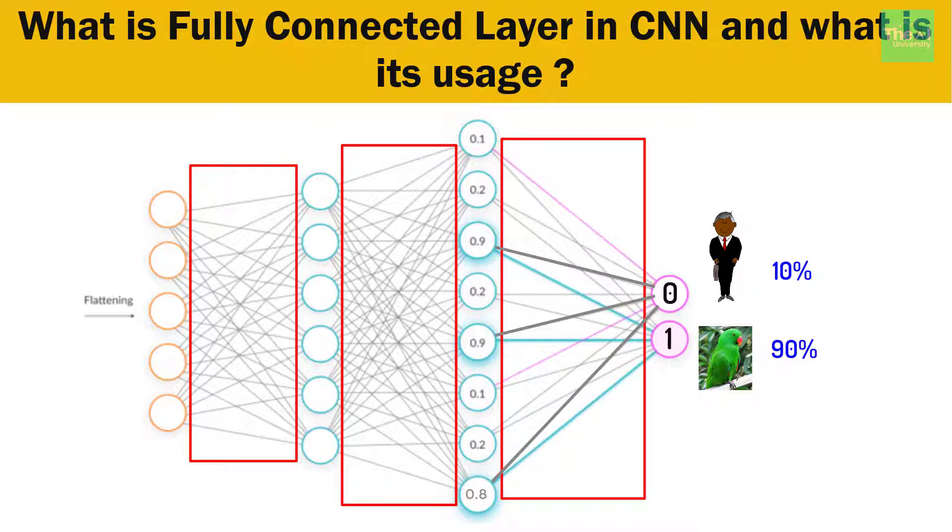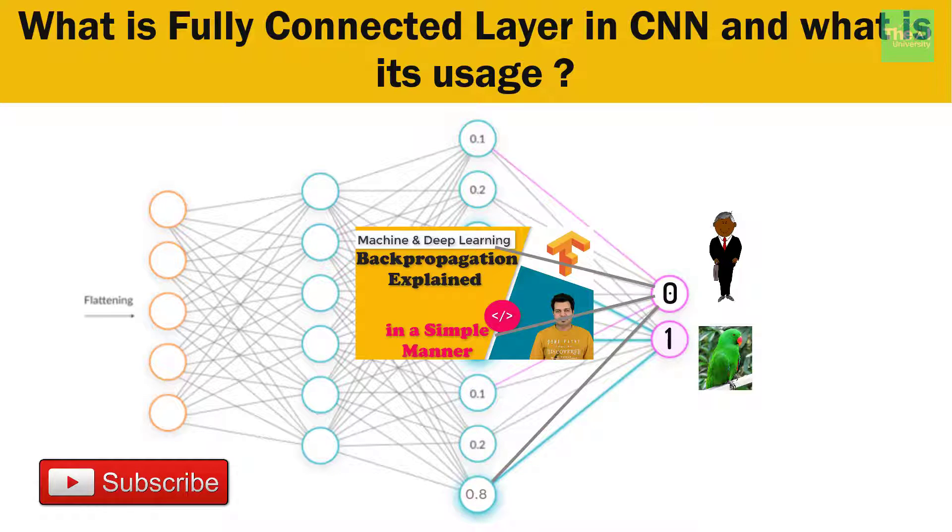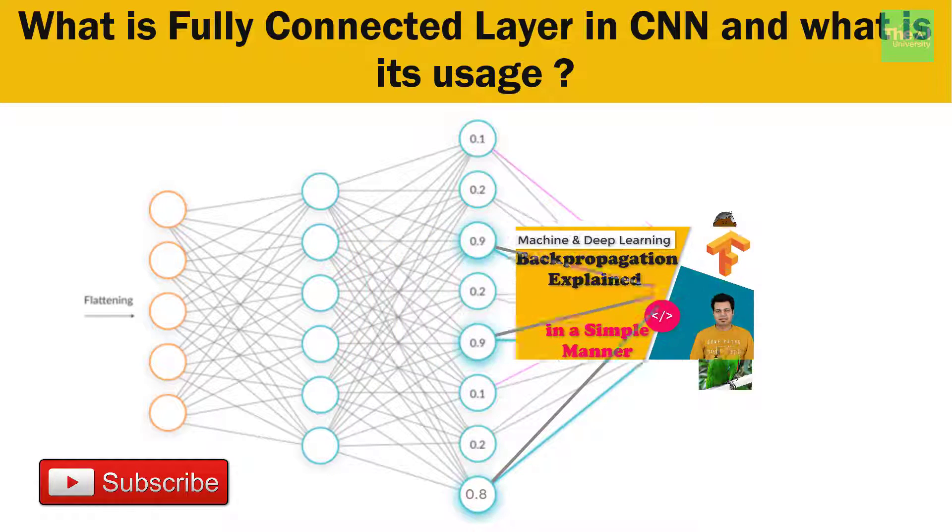Also, if you remember from the convolution layer video, there were feature detectors which were nothing but matrices, right? So those feature detectors also get better at identifying individual features from an image. If you want to know more about back propagation, you can watch this video. Link is given in the i button above. Please remember that the fully connected part of the convolution neural network goes through its own back propagation process to determine the most accurate weights. So this was the entire flow of data from forward and back propagation perspective.